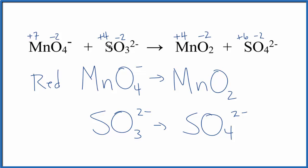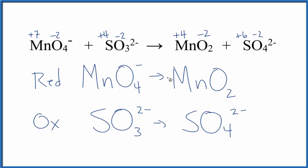The sulfur goes from plus 4 here to plus 6. That increase. That's going to be oxidation. You can also see that the number of oxygen atoms increased as well. So these are the half reactions for our redox equation.